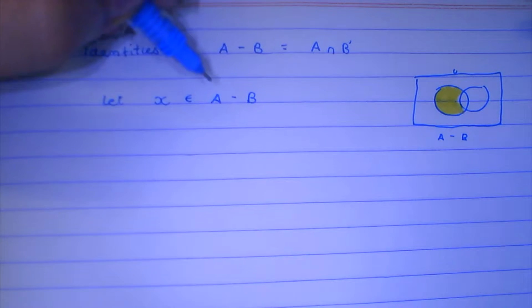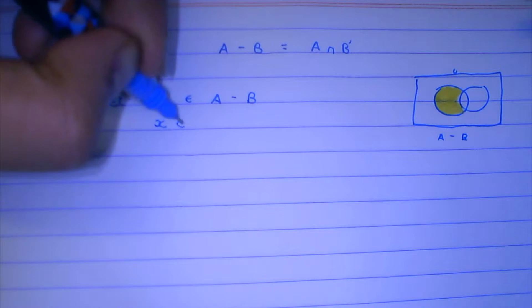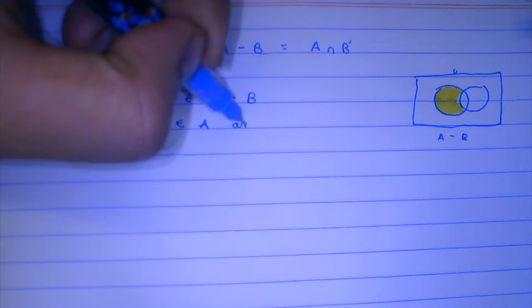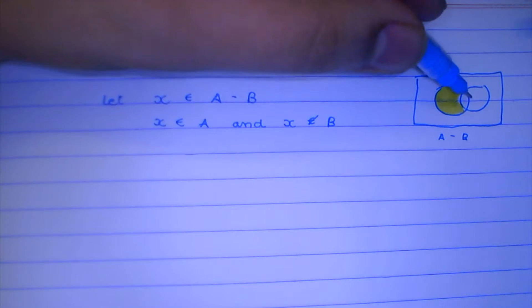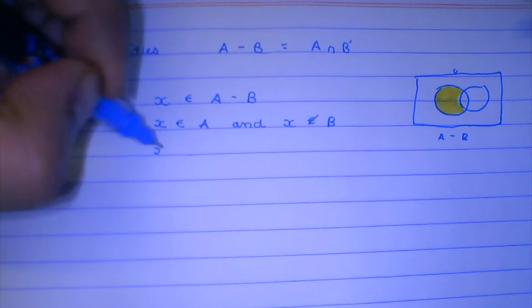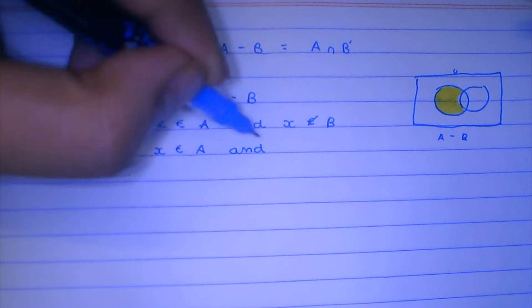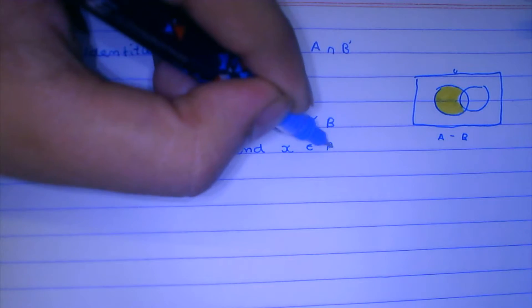Let X belongs to A minus B. And this means that X belongs to A, yes X belongs to A, and X does not belong to B.